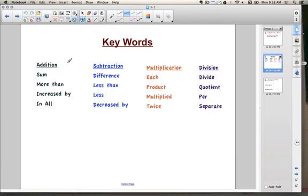The words listed here are all words that mean addition. So sum, more than, increased by, and in all are all clues that addition is the operation that's happening. Difference, less than, less, and decreased by are some words that also mean subtraction. Each, product, multiplied, and twice are all words that also mean multiplication.